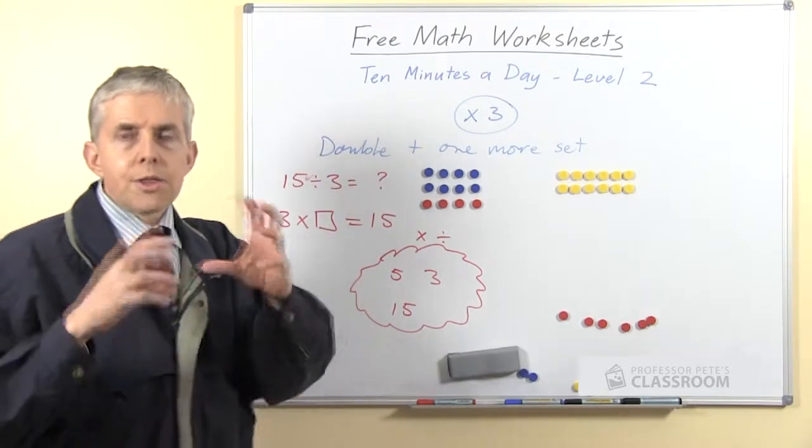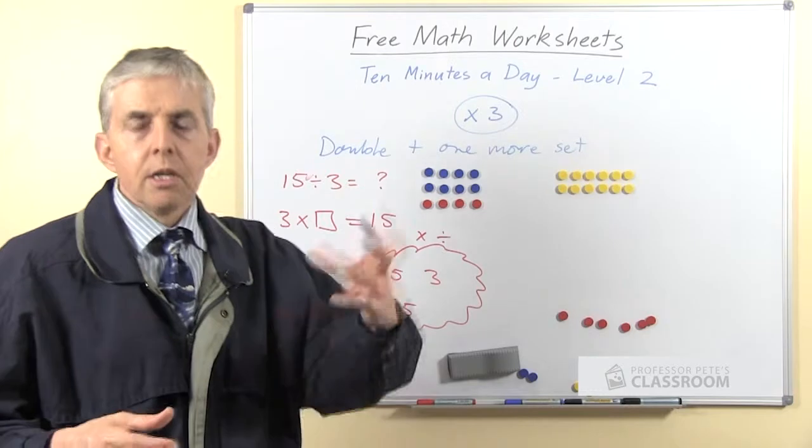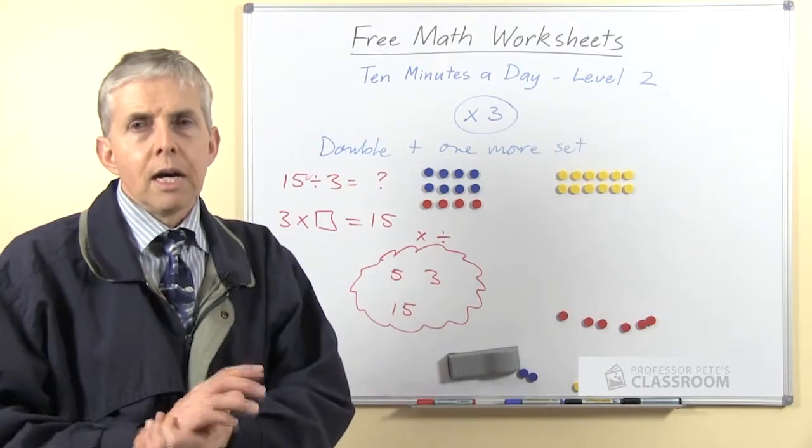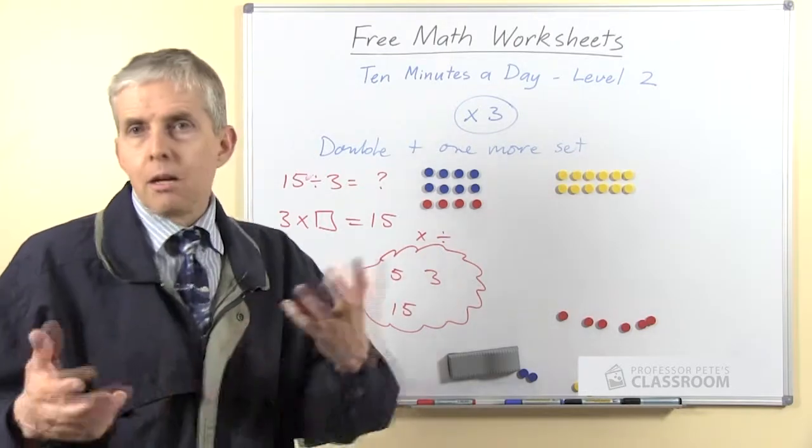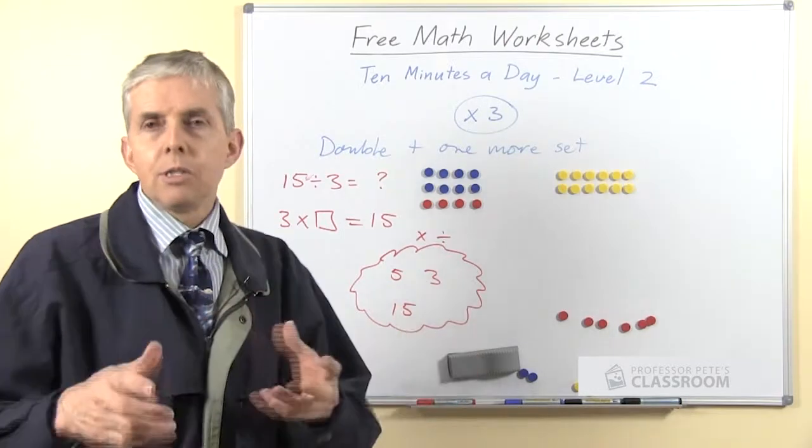So then they can think of other triads in the 3 times table, like 3, 3, and 9, or 3, 10, and 30, or 3, 8, and 24, and so on.